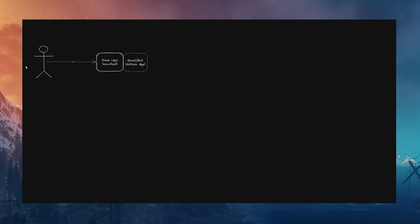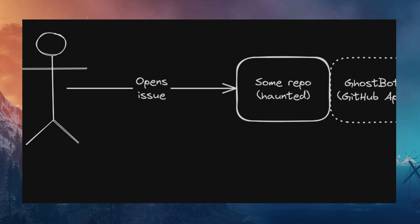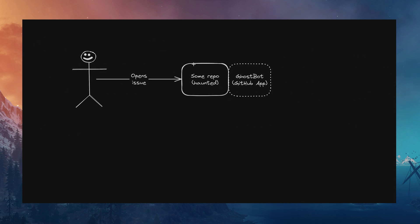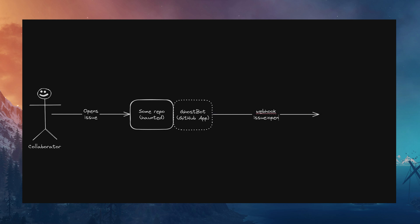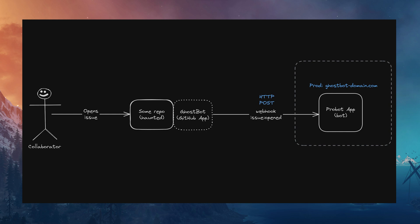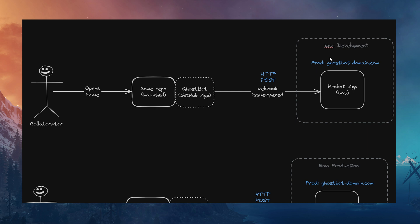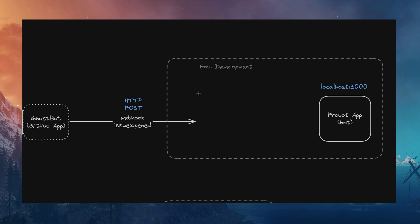Let's say we have a hunted repo, which is basically any repo where our ghost bot is installed. Now let's say someone decides to open an issue. Since our bot is configured to listen to that particular event, that's going to trigger a webhook event from GitHub to our Probot app. This webhook is essentially an HTTP POST request. That request needs to go somewhere — the address where our bot is running waiting for events. But there's a problem: during development, our bot runs in our local network, and normally GitHub won't be able to reach it.